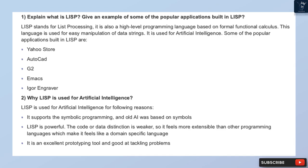Question 2: Why is Lisp used for artificial intelligence? Lisp is used for AI for the following reasons: it supports symbolic programming and old AI was based on symbols. Lisp is powerful — the code-or-data distinction is weaker, so it feels more extensible than other programming languages, making it feel like a domain-specific language. It is also an excellent prototyping tool and good at tackling problems.